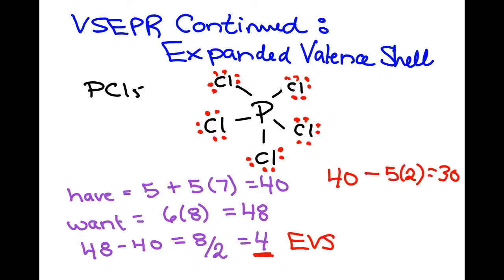If we look at the central atom, there are five bonded pairs and no lone pairs. That means that the molecular shape and the geometric shape are the same, and they are both trigonal bipyramidal.